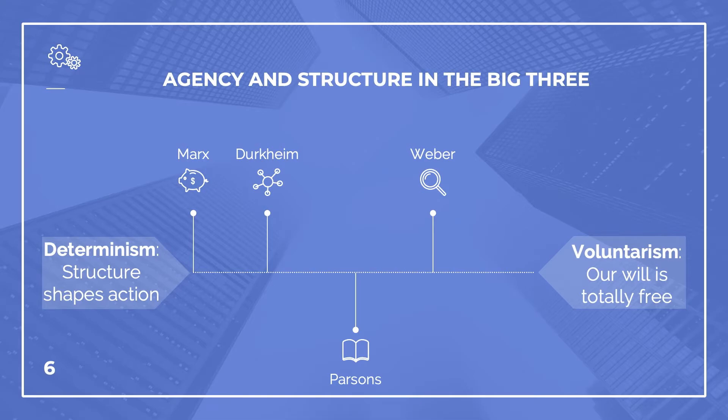Durkheim, too, focuses on structures that determine action. He's interested in how social forces exist outside of our consciousness and restrict our behavior. But he also states that individualism is a social product, a result of the collective consciousness, and how we make social forces our own is what makes us what we are. So in my reading, Durkheim belongs after Marx on the spectrum — he allows us more individual volition, even if the terms are on loan from the type of society that allows us that individuality.